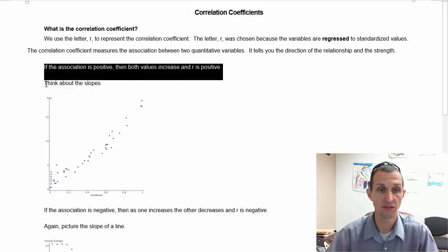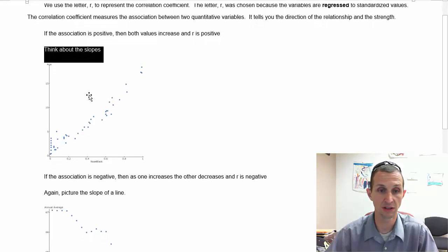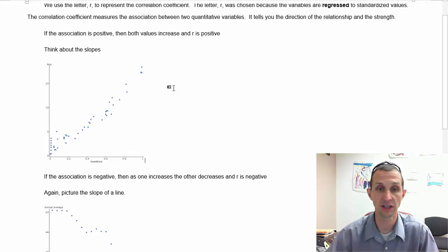Think about the slope of a line. As we look at this particular graph right here, you can see as the nose black of a tiger increases, the age of the tiger also increases. Nose black is one of those things we can use to help predict a tiger's age. As the nose black increases, the actual age of the tiger increases. This was some real data I got.